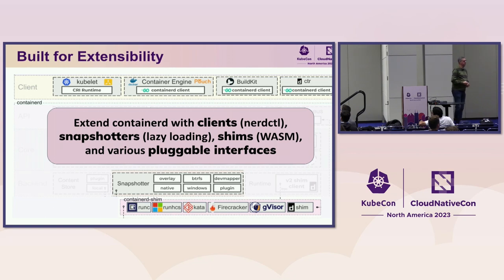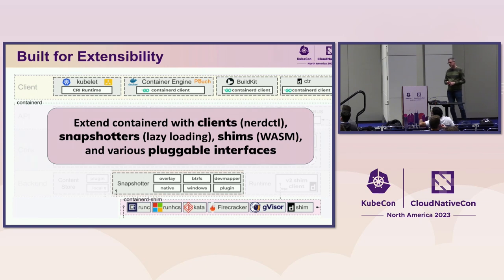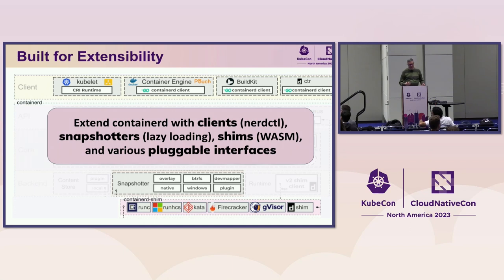One of the things we've really focused on in the last few years is building ContainerD for extensibility. We focused on this core that has been around since 2016 and was donated to the CNCF in 2017, so in many ways the core of the project is fairly mature. As we've matured, we've tried to make sure you can add capabilities and functionality, or consume ContainerD in a way that's valuable for your use case. That spans the spectrum from building your own client to using the various client interfaces — the kubelet uses the CRI interface as a client, and you have Docker BuildKit, CTR, nerdctl, and other clients using the Go SDK.